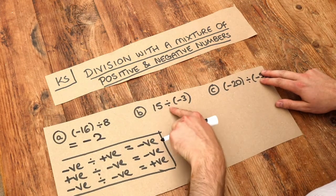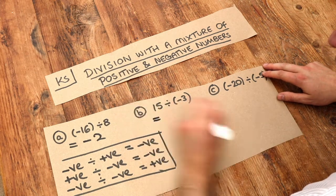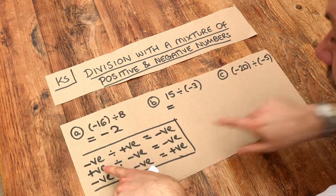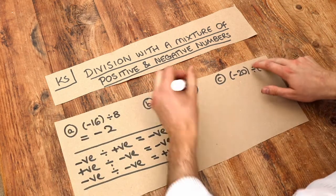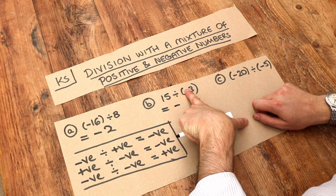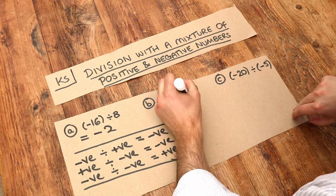The second one, 15 divided by minus 3. Let's first worry about the sign. We've got a mixture of positive and negative, so we know it's going to be a negative number. Let's put the minus. Then forgetting that sign, we're just going to do 15 divided by 3. 15 divided by 3 is 5, so it's minus 5.